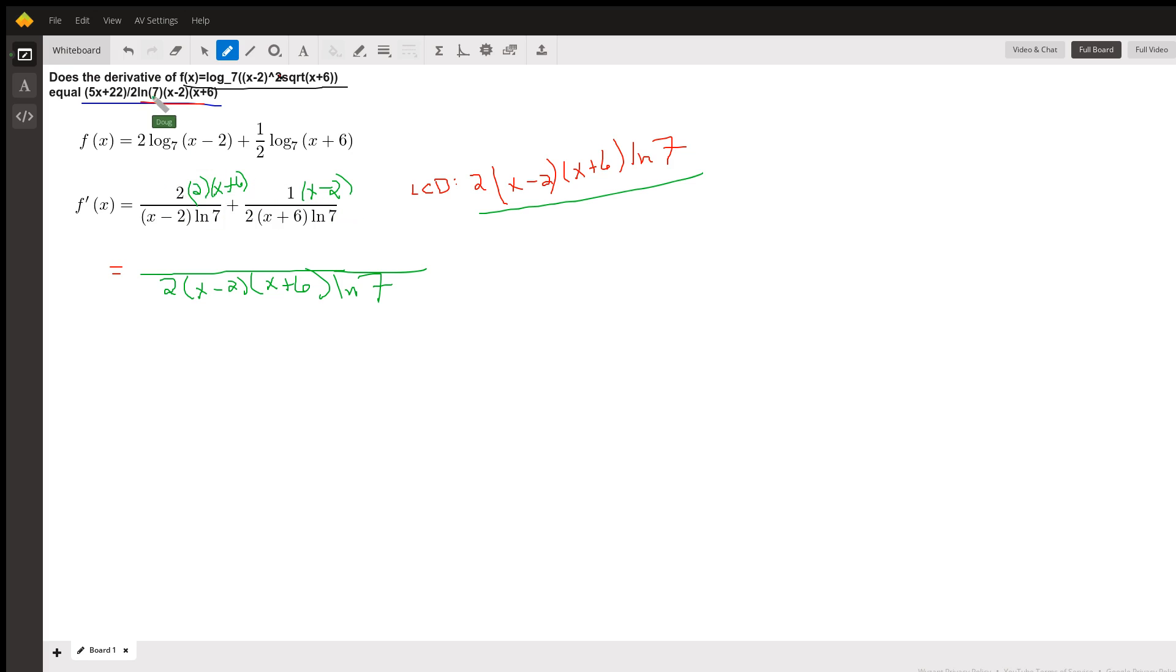The only question now is when we combine the terms in the numerator, are we going to get this 5x plus 22? And it looks like four times the quantity x plus six is 4x plus 24. Then we've got this plus x minus two. And it looks like that answer is correct. 5x plus 22 over the LCD. So the answer is correct.